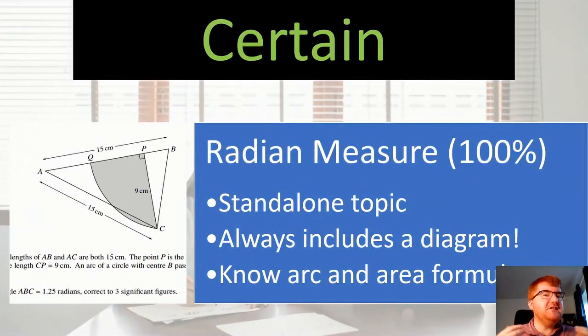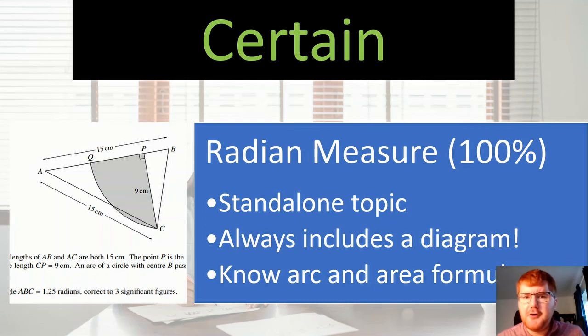And on to the certain section. None of these should be surprises to you, but I've got some interesting facts for you to really consider as you go through. The first one is radian measure, usually a standalone topic. It always includes a diagram. So that's always a good hint. Right, I need to remember radians and then I need to know those arc and area formulae. They're usually the two things that get tested in some shape or form. They'll get you to work out the arc of a particular shape or the area of, for example, the shaded area you see in front of you.